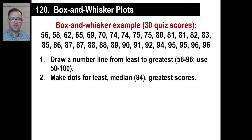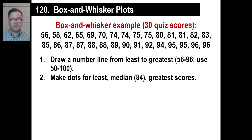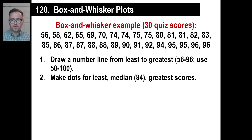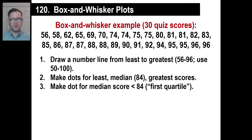Second thing is you're going to make dots for the least, which is 56, for the median — which you can see up here. There are 30 of them, so there is no actual middle one. So what we'll do is take the 83 and 85 and go right between there, and that's our median. The median is 84, and then the greatest score, which is 96. Make three dots for those.